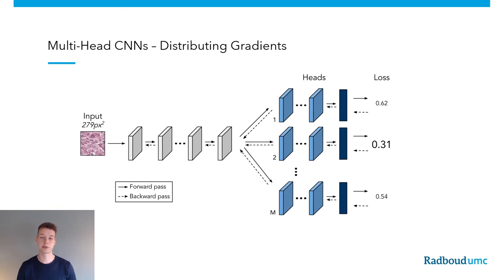For a different input pattern, say the second head has the lowest loss, and after gradient updating this head will be the most specialized for this input pattern. We hypothesize that distributing gradients this way will lead to a better coverage of the input space, which is important for improved out-of-distribution detection performance.